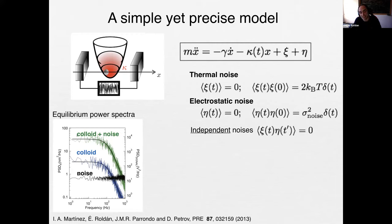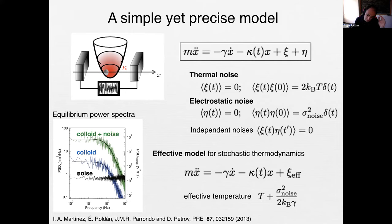Adding the noise puts more energy into all frequencies — the same as if the particle were in a hot water bath. This mimics a Langevin equation with an effective temperature: T_eff = T_water + something proportional to the noise strength σ². If we add a very strong noise it is like heating the particle very much; a weak noise is like having equilibrium. When we increase the field, the distribution broadens as expected.